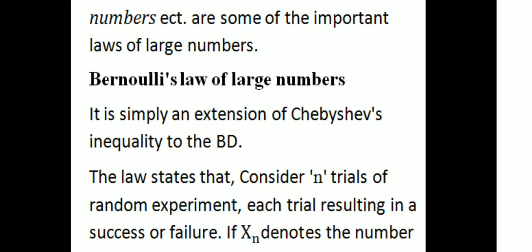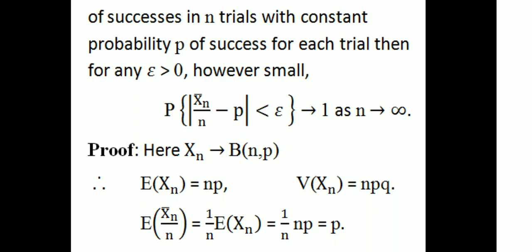Bernoulli's Law of Large Numbers is simply an extension of Chebyshev's inequality to the binomial distribution. This law states: consider N trials of a random experiment, each trial resulting in a success or failure. If Xn denotes the number of successes in N trials with constant probability p of success for each trial, then for any epsilon greater than 0, probability of |Xn/N minus p| less than epsilon tends to 1 as N tends to infinity.